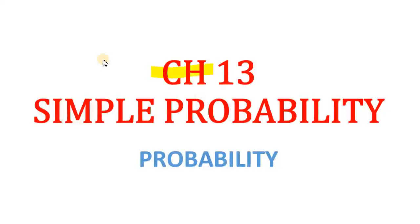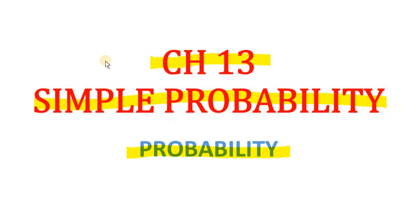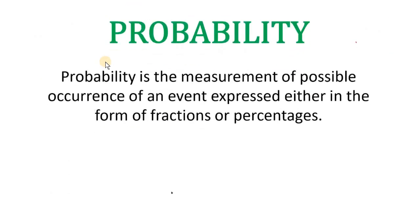Now we're going to see the new chapter, Chapter 13: Simple Probability. So in this chapter, we're going to see what is a probability. So first, in your textbook, the probability means a measurement of possible occurrence of an event.